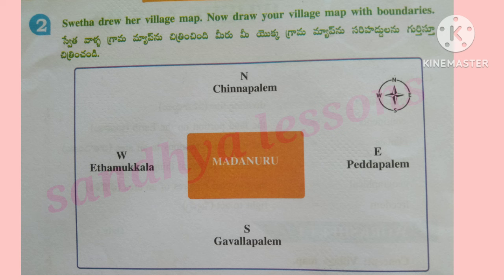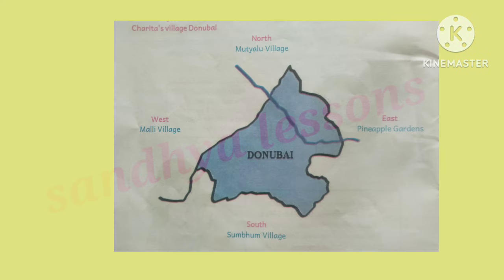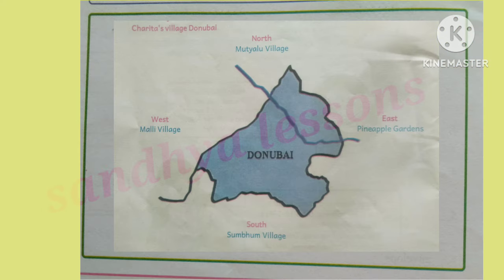Question 2: Swatha drew her village map. Now draw your village map with boundaries. Donubai village has Pineapple Gardens to the East, Mutyalu village to the North, Malli village to the West, and Sumbham village to the South.